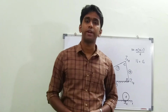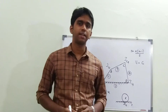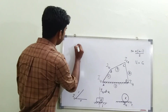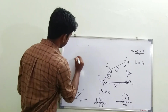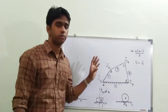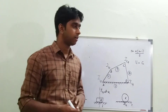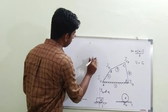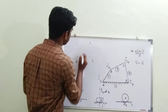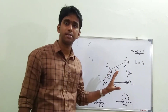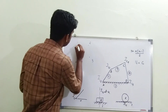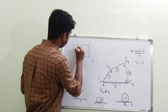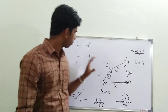Next step is to locate the secondary instantaneous centers. To find them, mark as many points as the number of links — here we have four links so mark four points, arranged as the corners of a square. Name these points 1, 2, 3, and 4, corresponding to the links. Whatever primary instantaneous centers we have already located, join them using solid lines — so we join 1-2, 2-3, 3-4, and 1-4.